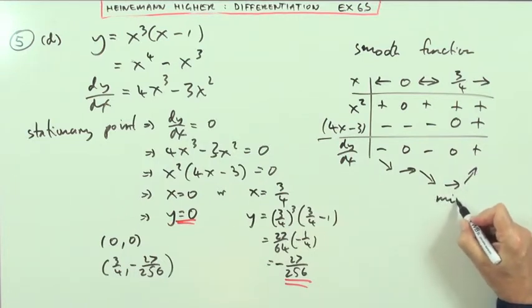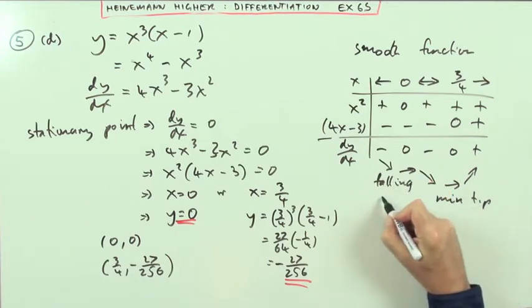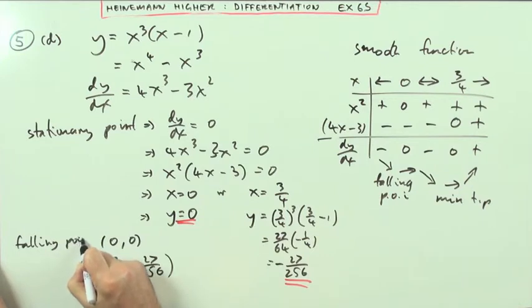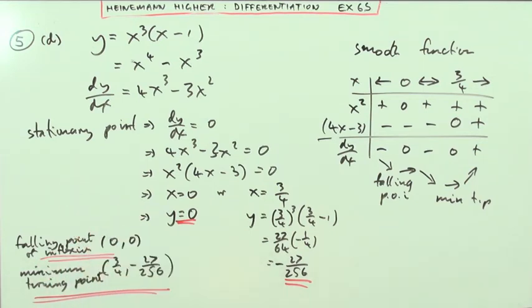It's a minimum turning point, and it's a falling point of inflection, which you can just insert beside them. So that first one, that was a falling point of inflection, and that one was a minimum turning point. And there is 5D and the whole of question 5. So that's good.